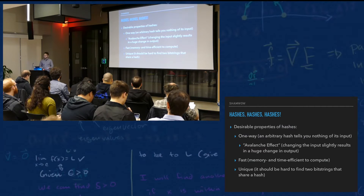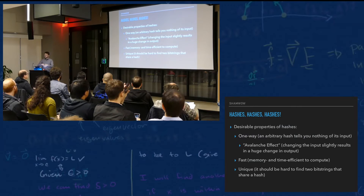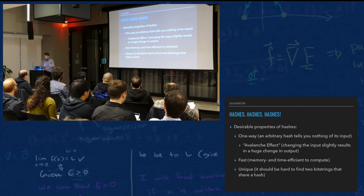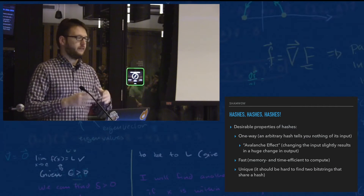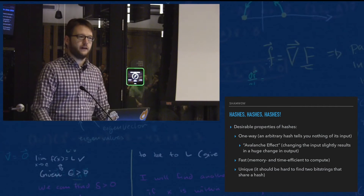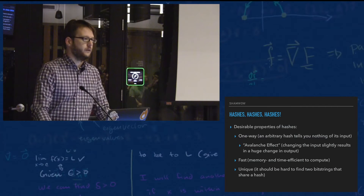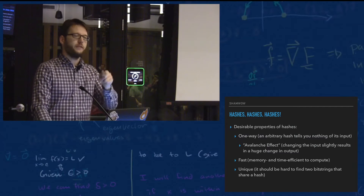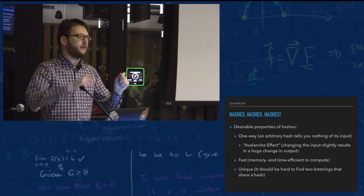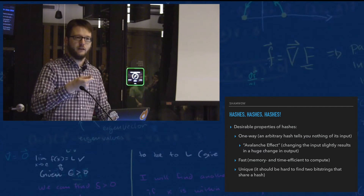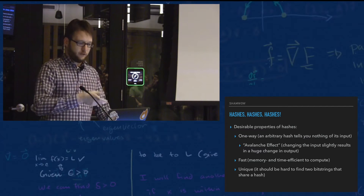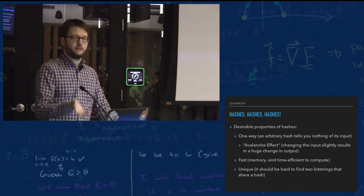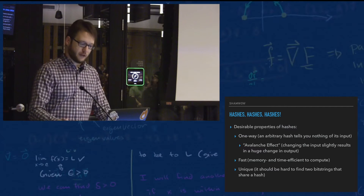You also want the avalanche effect. If you change one small part of the input string, you get a completely different hash on the other side. For example, 'I am a cat' and 'I am a hat' have completely different outputs in SHA-2. The fact that you changed one thing doesn't tell you if you're any closer to finding the right string.